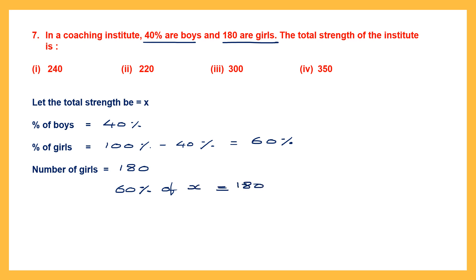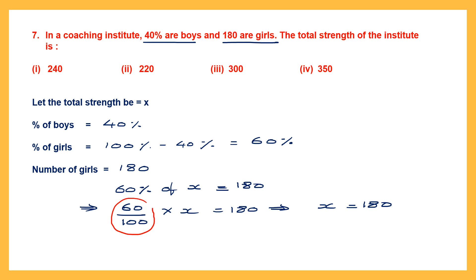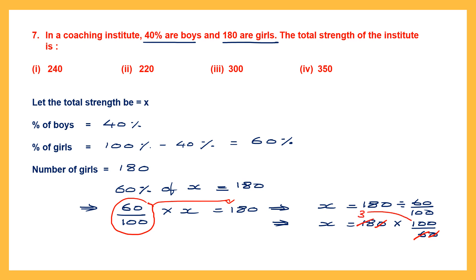Solving: 60 by 100 into x equals 180. Taking 60 by 100 to the other side as division: x equals 180 multiplied by the reciprocal 100 by 60. Cancelling: 6 threes are 18, then 3 into 100 is 300. So x equals 300. The total strength is 300, and that is option 3.